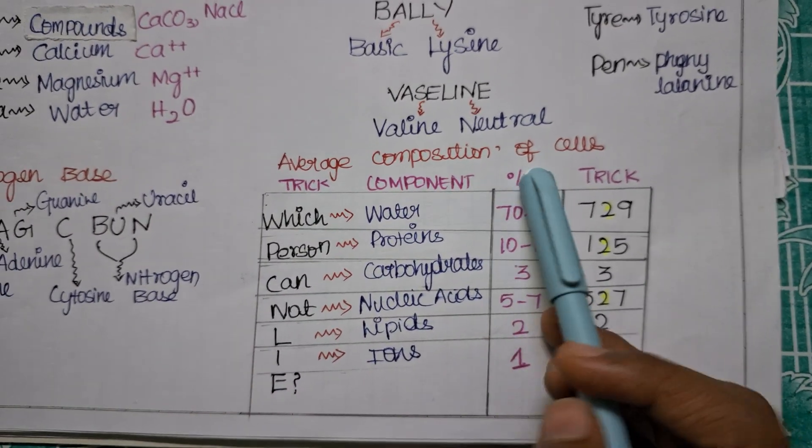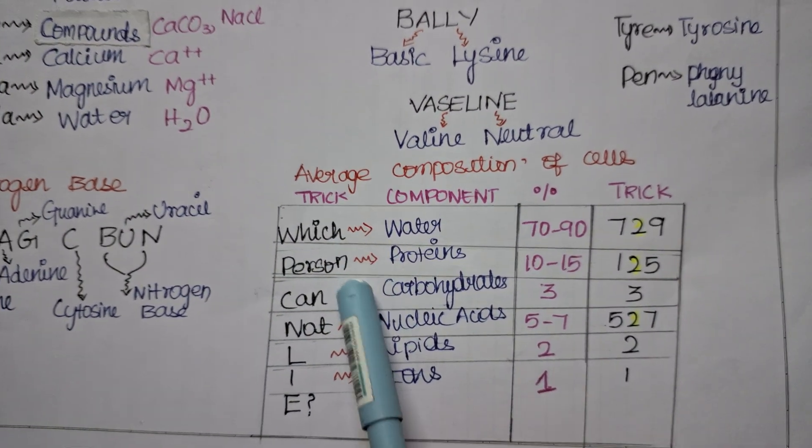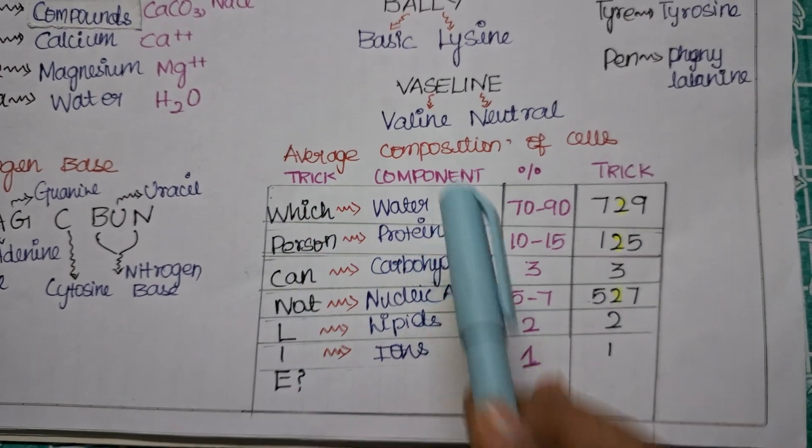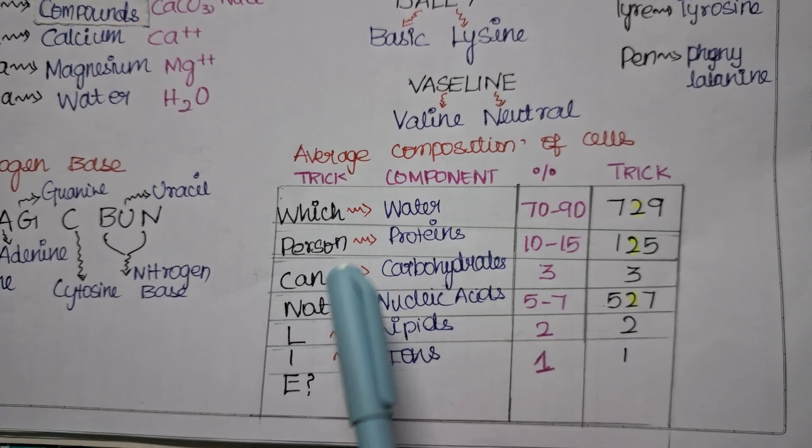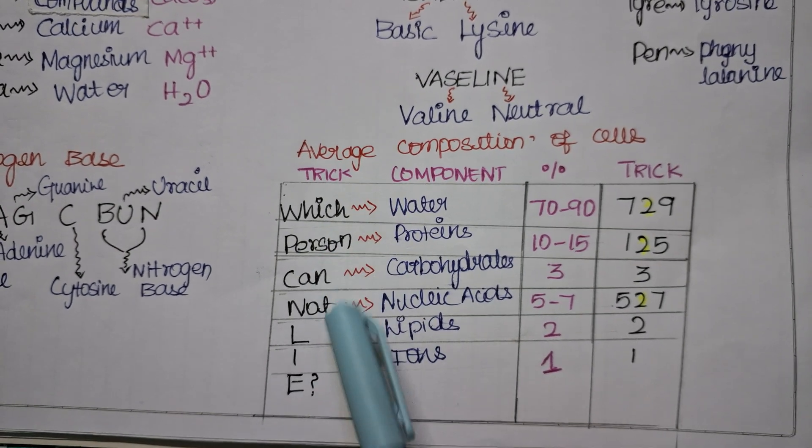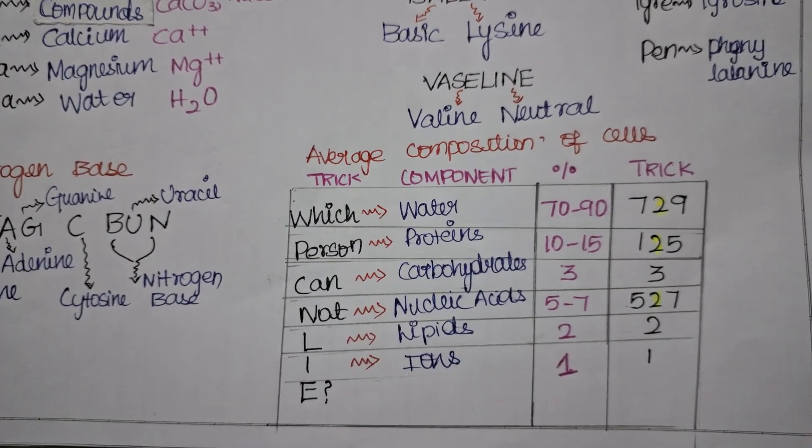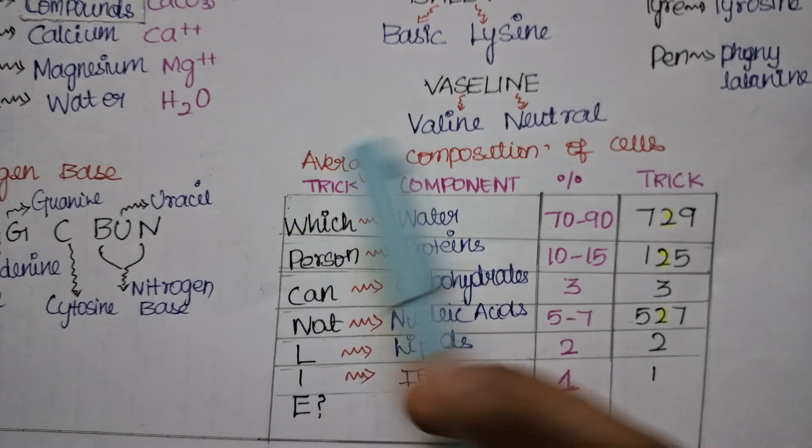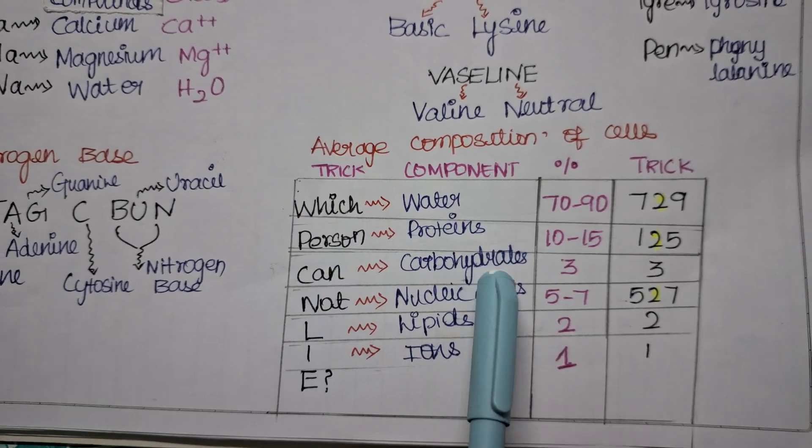Now the next one is to memorize the average composition of cells. Now the first is to memorize what are the components, what are they. The trick is which person cannot lie - LIE this should be written separately. Which person cannot lie? So in your friend's gang you need to tell which person cannot lie, he never lies.